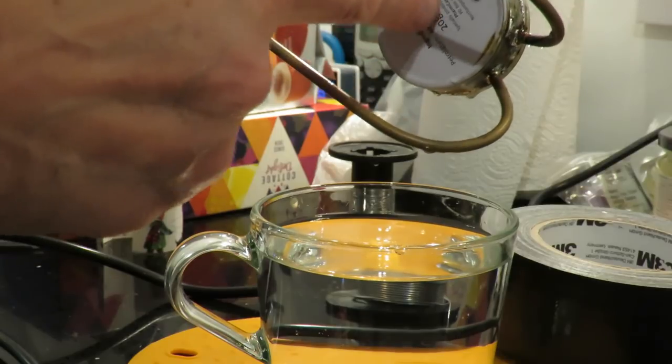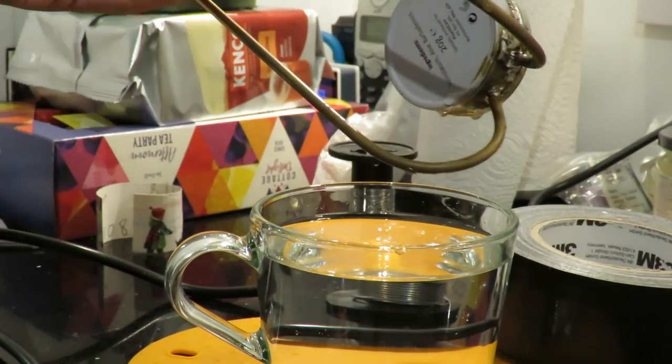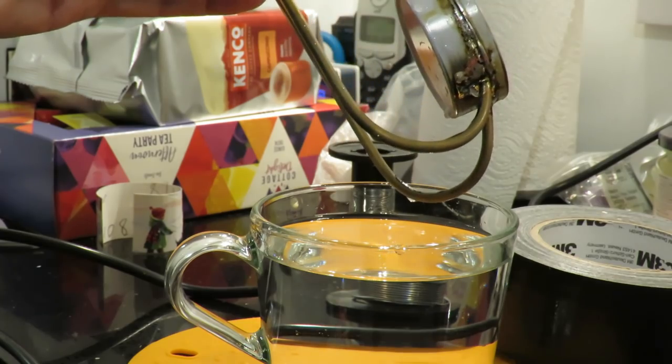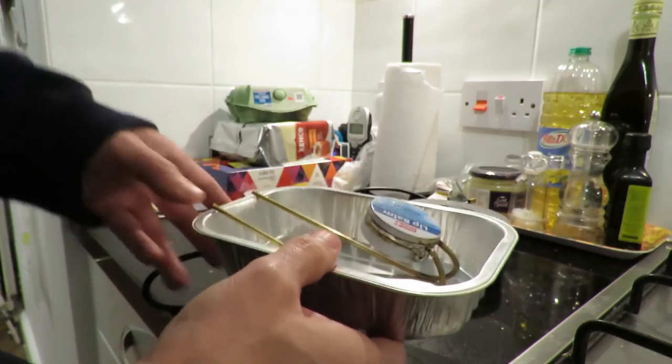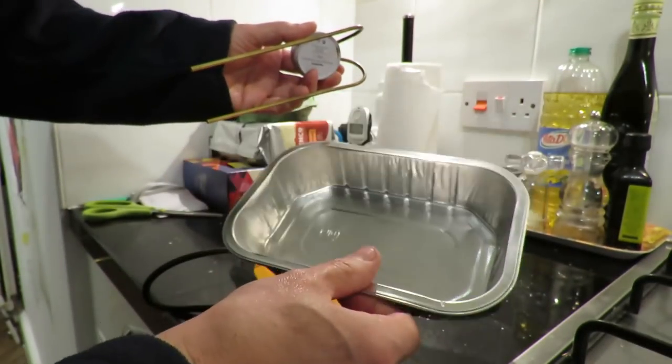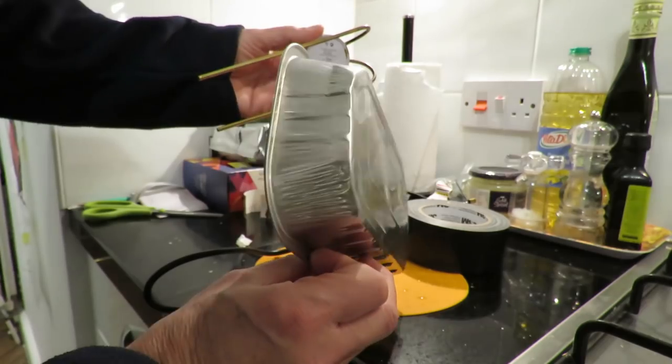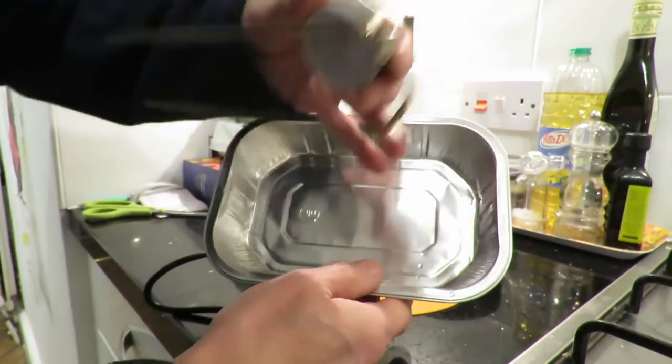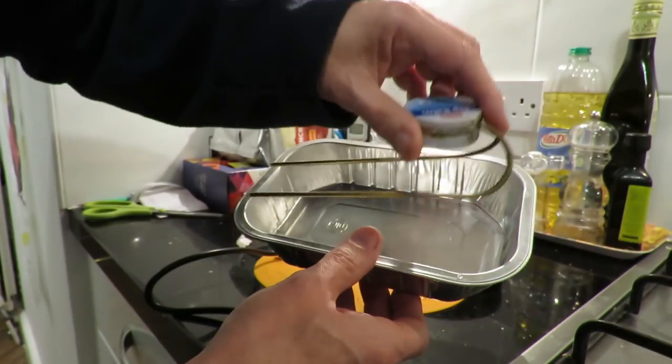Yeah looks like we've got a good seal. Obviously when we put a flame under here it's going to burn the paint. I'm not too worried about that. For a quick test I think what I'll do is I'll use this aluminium tray that our dinner came in the other day. So I'll just poke a couple of holes in it so we can push the tubes through.